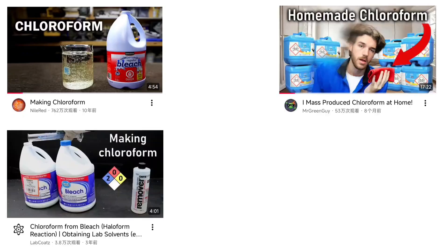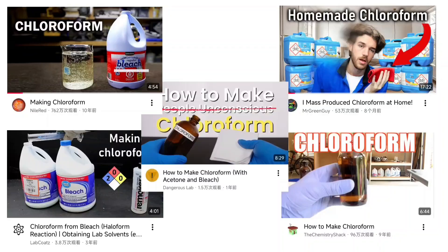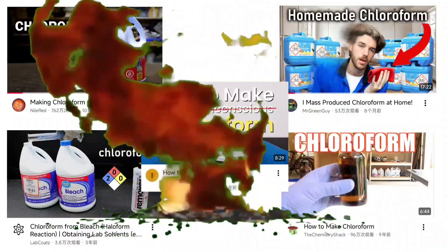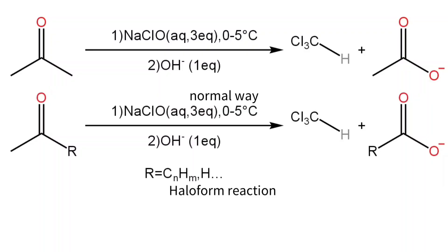For a long time, whenever people talk about making chloroform in the laboratory, they immediately think of reacting acetone with sodium hypochlorite solution. Today, I want to make it differently, starting with alcohol. The traditional method reacts acetone with sodium hypochlorite directly — this is called the haloform reaction. For it to work, the substrate must have a carbonyl group. In the acetone-based path, the carbon-carbon bond on the carbonyl breaks to form chloroform and sodium acetate.